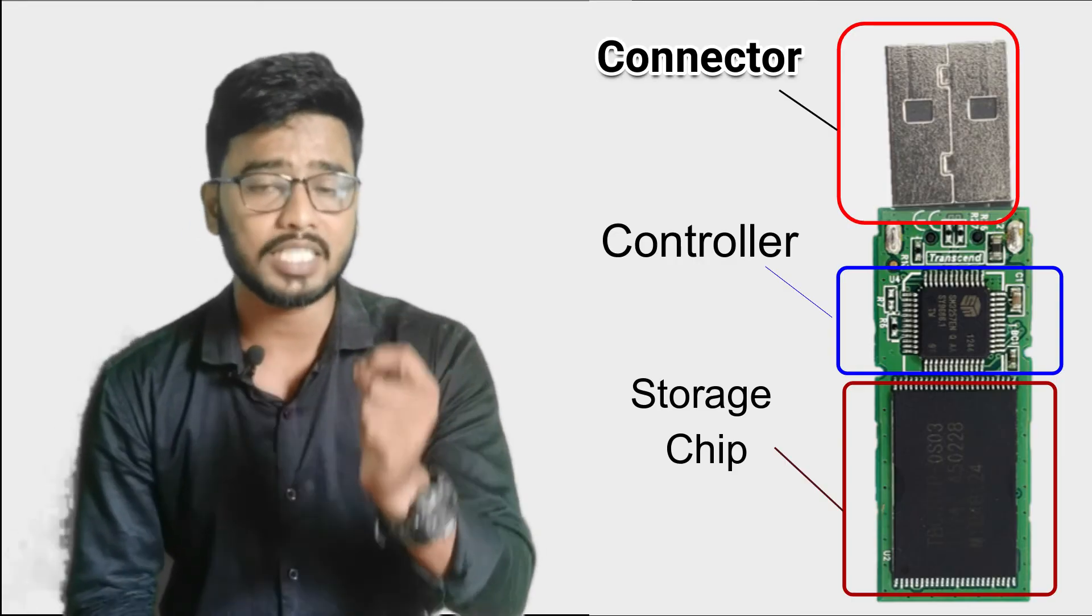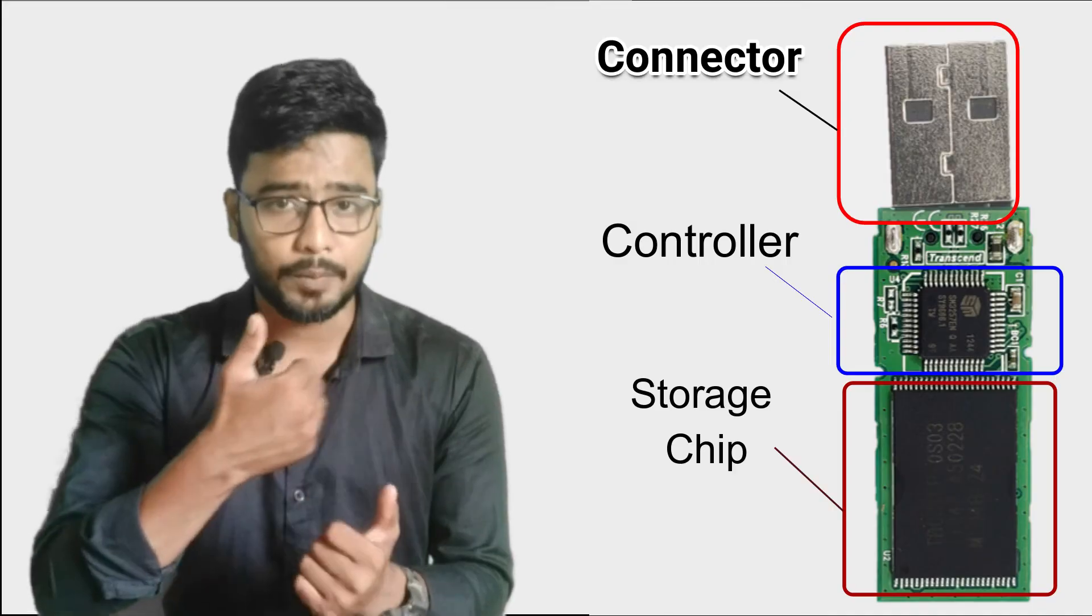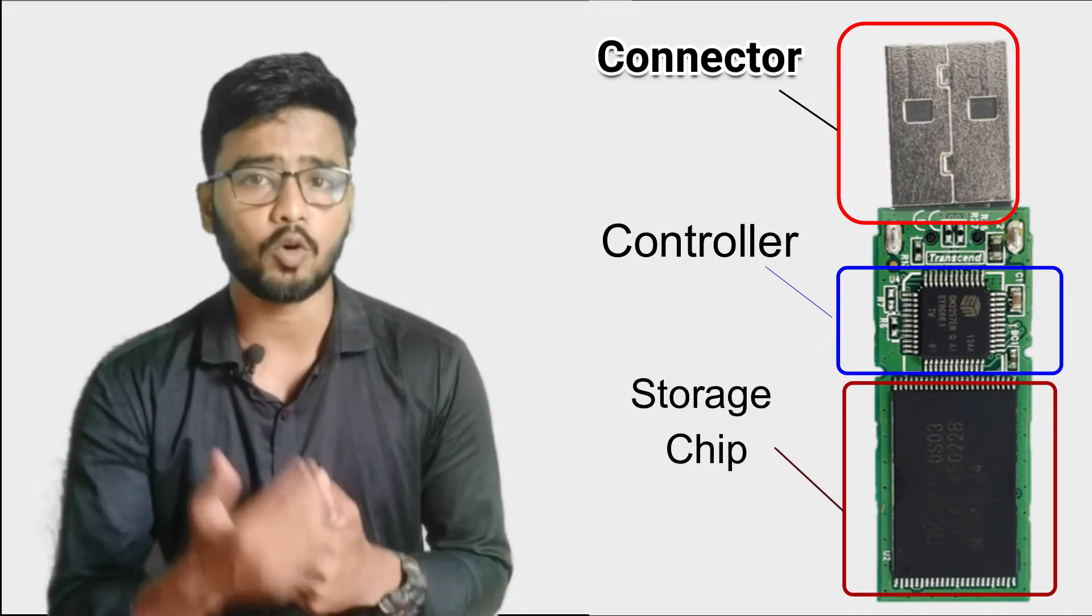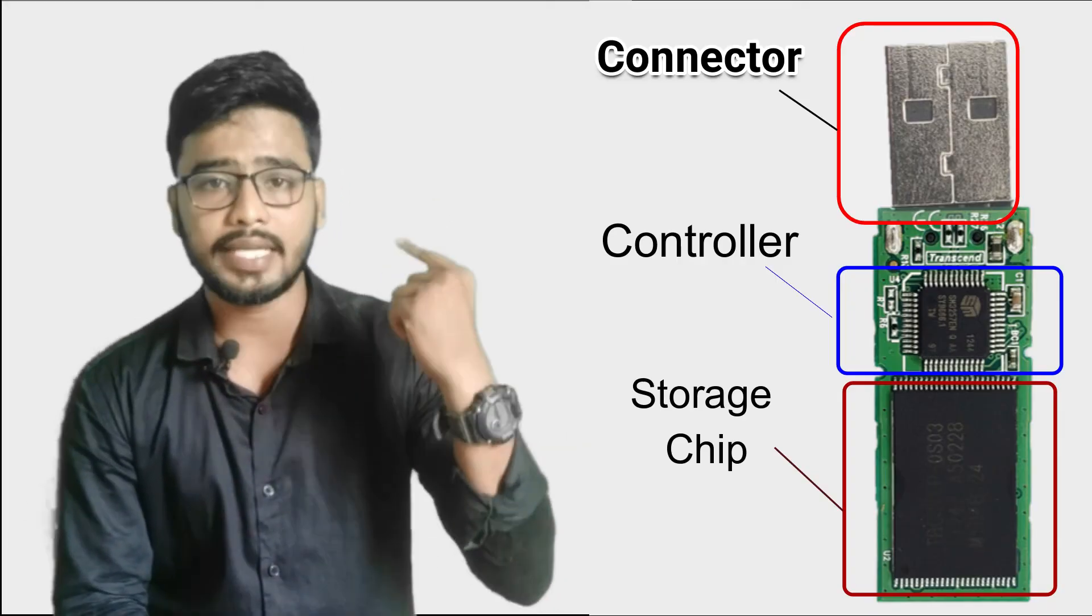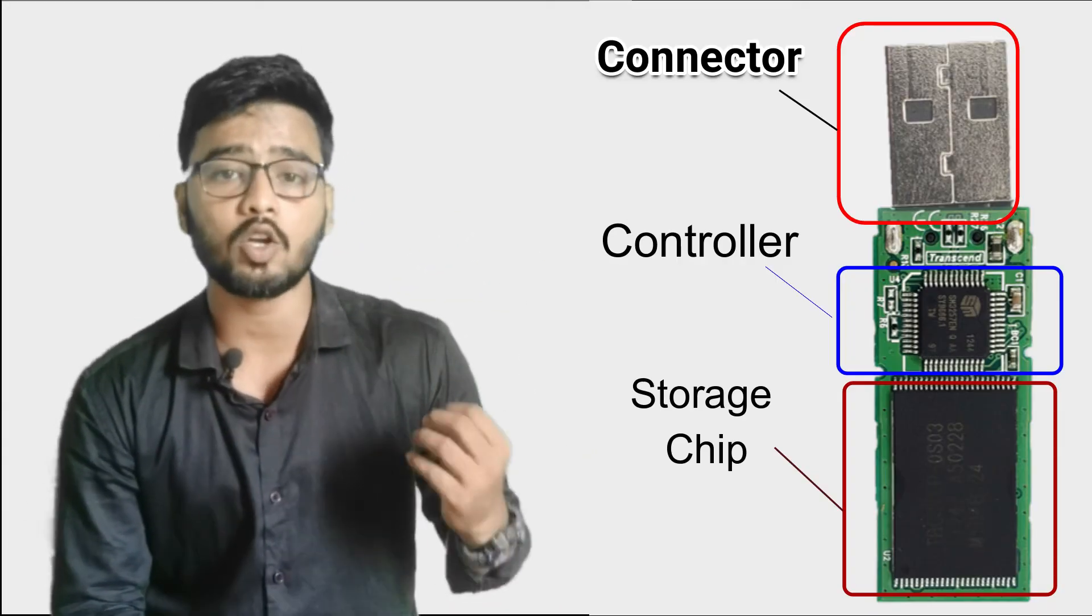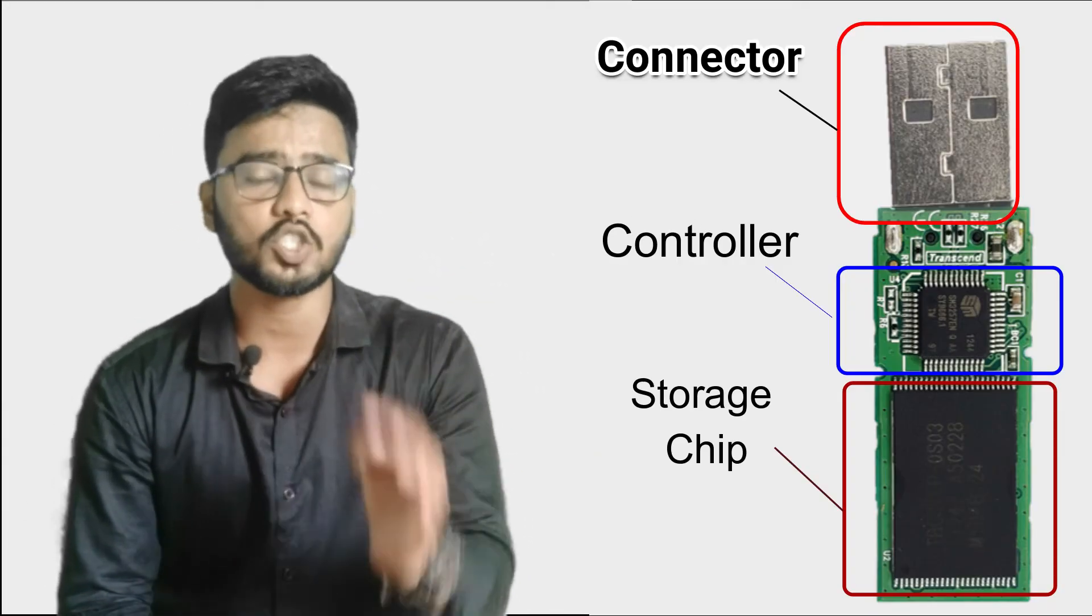So this is why, in an efficient way, your data transfers very quickly because of the microchip. It will transfer with speed. This is the overview where there are three main things: one is the connector, the second is the controller, and the third is the memory chip.